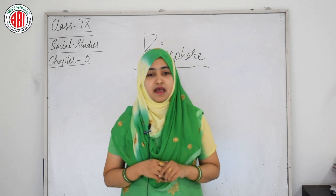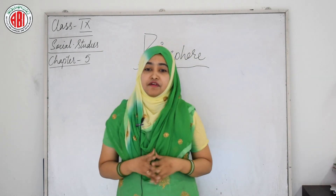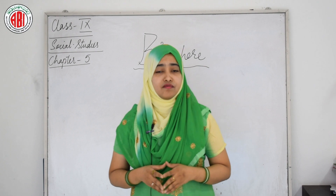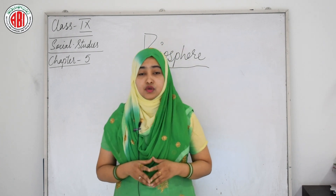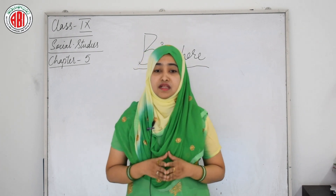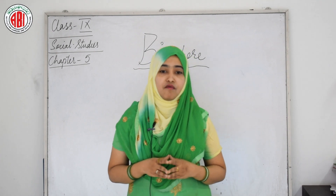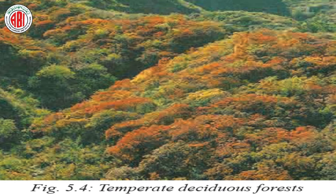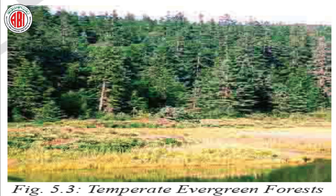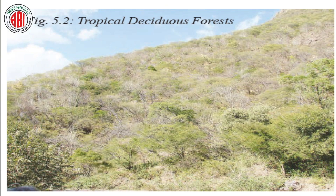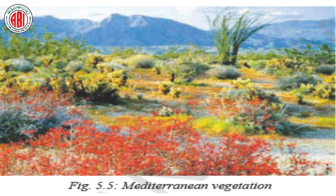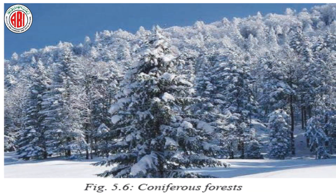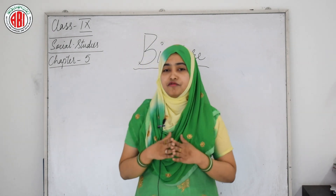There are different kinds of forests depending upon the climate of the place. Looking at the pictures, the types include: tropical evergreen forests, tropical deciduous forests, temperate evergreen forests, temperate deciduous forests, Mediterranean vegetation, and coniferous forests.